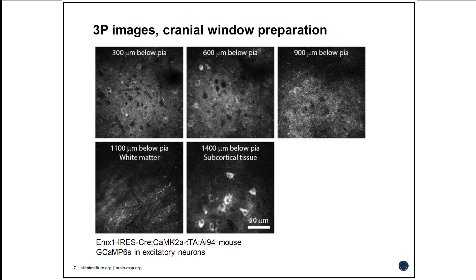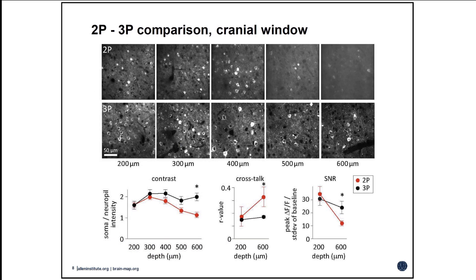To give a slightly more direct comparison, here we have two stacks from a single animal at 200, 300, 400, 500, and 600 microns. In the two-photon image, contrast is already deteriorating at 400 microns and largely lost at 500 and 600, with very few cells visible in those deep locations. In contrast, with three-photon microscopy, you've got maintained contrast through the full depth of the tissue, and you can see those cells and get usable data.